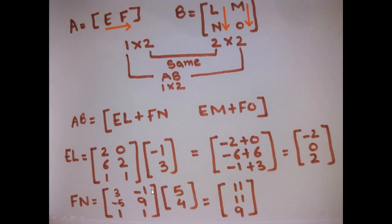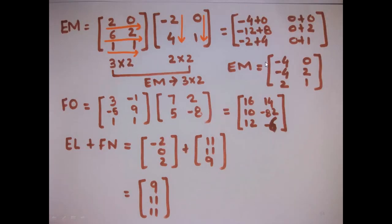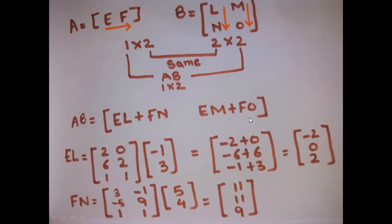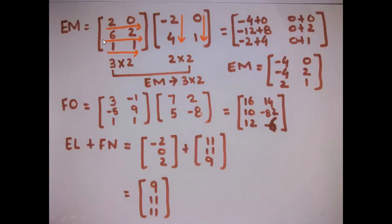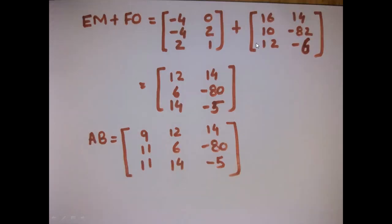E·L + F·N results in [-2+11, 0+11, 9+2]. Then E·M + F·O is computed the same way. These results are placed into the composite matrix. The final answer obtained by partitioned multiplication is the same as you would get if you performed normal (non-partitioned) multiplication of A and B directly.